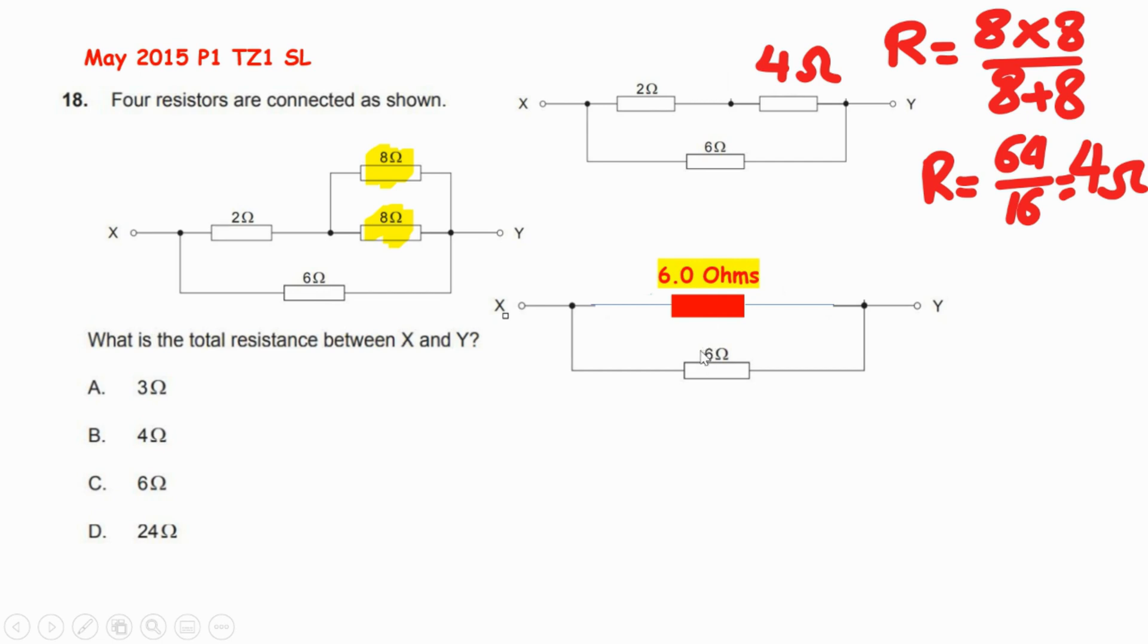Now they are in parallel, so it means I'm going to use the same formula I used before for the 8Ω and 8Ω. So 6 times 6 divided by 6 plus 6 equals 36 divided by 12, which is 3 ohms. The correct answer is A.